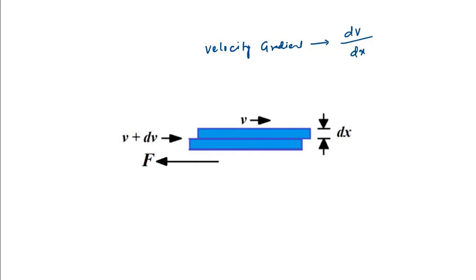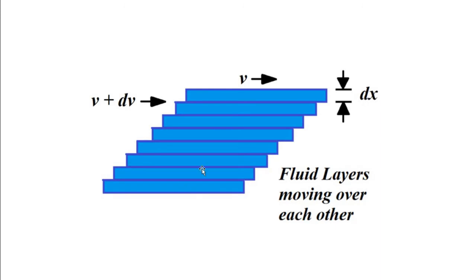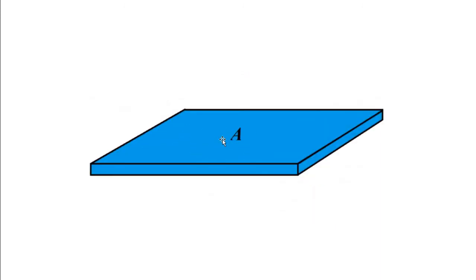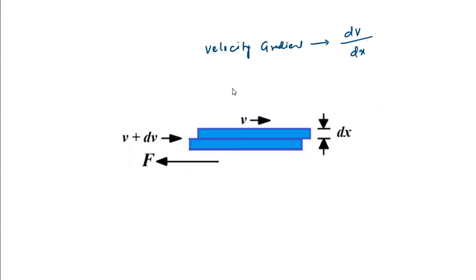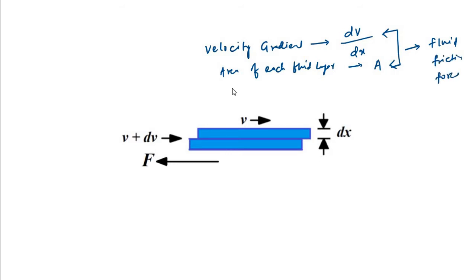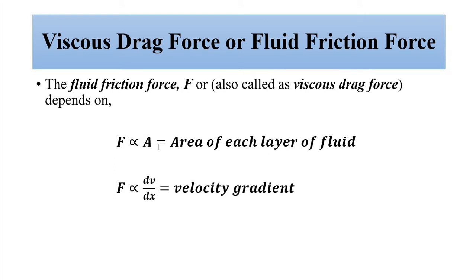The next important factor is the area of each fluid layer. The layers one above the other each have a certain surface area; let's call it A, and we assume it is the same for both. These two factors — the area A and the velocity gradient dv/dx — both contribute to the fluid friction force. The fluid friction force is directly proportional to the area of each layer and also directly proportional to the velocity gradient dv/dx.